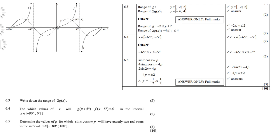Right 6.5, determine the values of p for which sin x times cos x equals p will have exactly two real roots. And you must look for the answer in the interval negative 180 to positive 180. It means the entire graph. So for sin x cos x equals p, then what you do is you multiply both sides by 4.